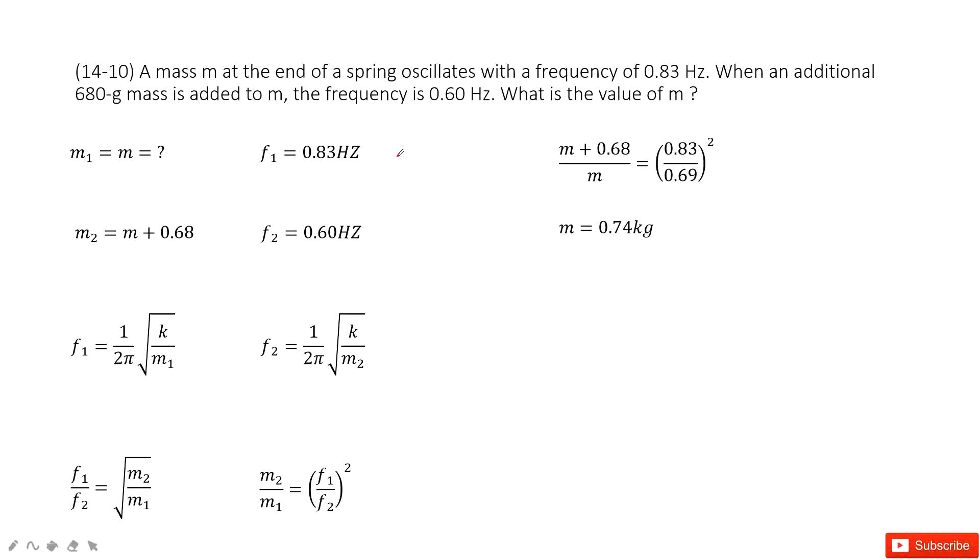Chapter 14 is about oscillations. There we consider the spring in simple harmonic oscillations. The first time the mass is given, it is mass m. We don't know it, we need to find it.